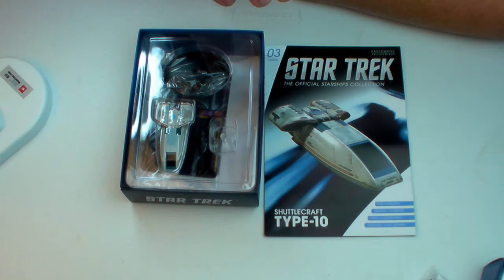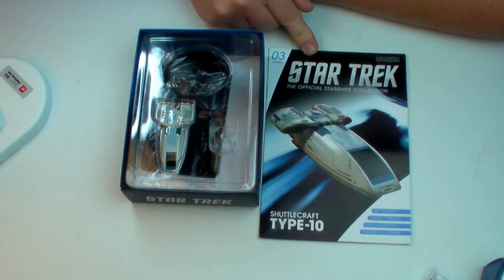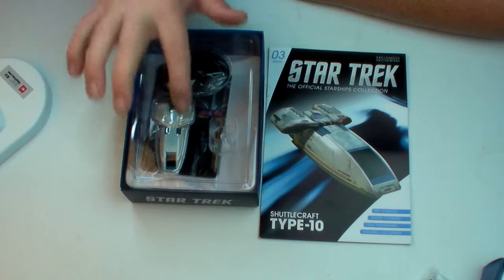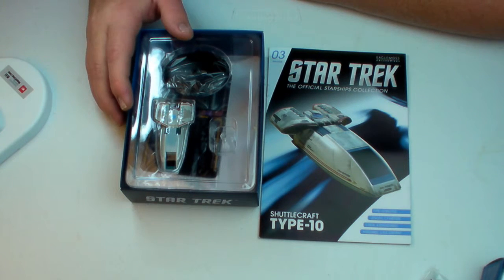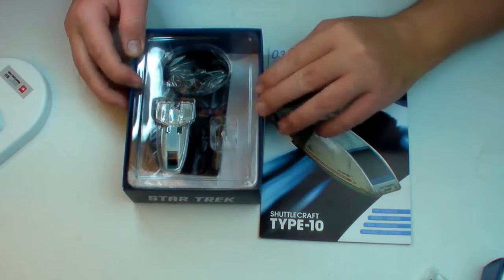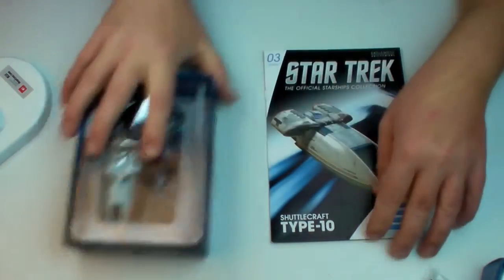The Type 10. Read that upside down for a second and I was like type 1, that's not right. Type 10 shuttlecraft which for some reason comes before issue or magazine 4 which is the type 9. This is the one that has the kind of defiant nacelle type design, which I never even really noticed before. But I did not watch Deep Space Nine as religiously as I did the others.